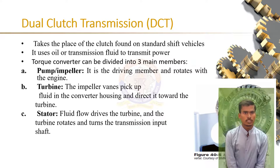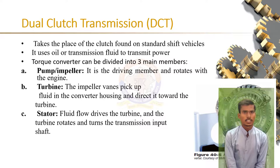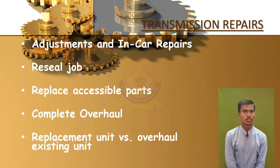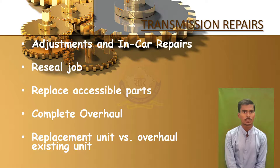The Dual Clutch Transmission (DCT), sometimes referred to as a twin clutch transmission, is a type of multi-speed transmission system that uses two separate clutches for odd and even gear sets. The design is often similar to two separate manual transmissions with respective clutches contained within one housing and working as one unit. In car and truck applications, the DCT functions as an automatic transmission requiring no driver input to change gears. In order to keep the automobile working, regular maintenance of the car is also necessary — sometimes requiring oiling, sometimes replacement, and sometimes complete overhauling.